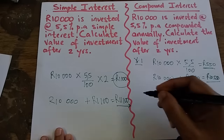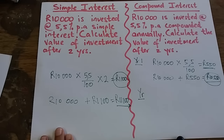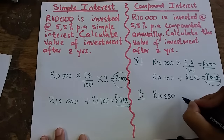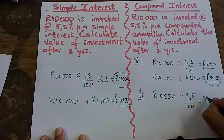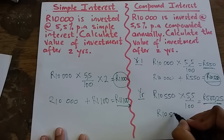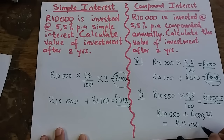The money was invested for two years, so we calculate Year 2. The starting amount for Year 2 is the end amount from Year 1, which is R10,550. Multiplying by 5.5% gives interest of R580.25. The value of the investment after two years is R10,550 plus R580.25, which equals R11,130.25.